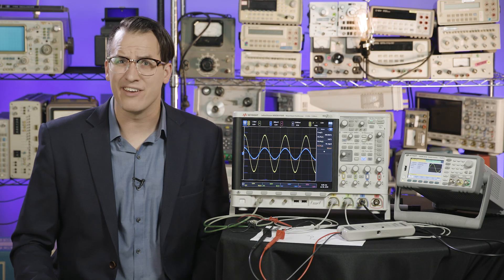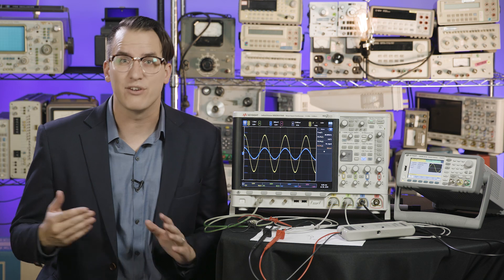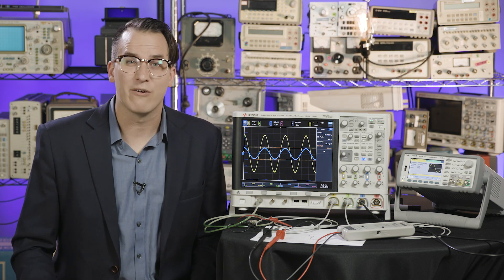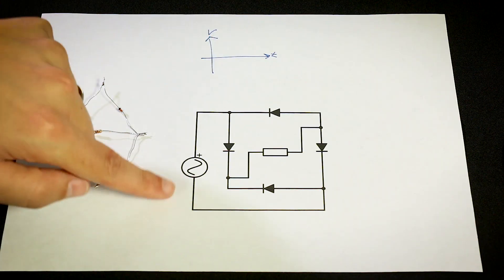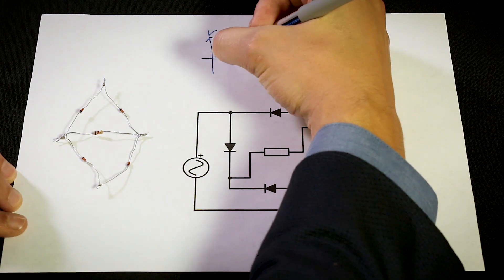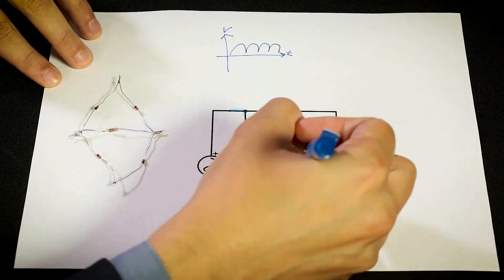I also ran into this issue trying to measure the load of a full-bridge rectifier as I was prepping for the 4.5 practical uses for a diode video, check out the card on that. Let's probe the rectifier with both a single-ended probe and a differential probe and look at the difference. Here's the schematic, and we know what the output is supposed to look like for a sine wave input.